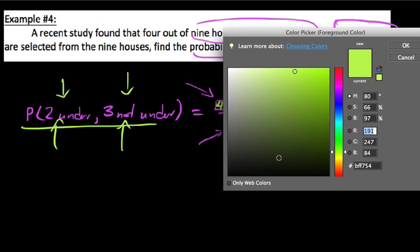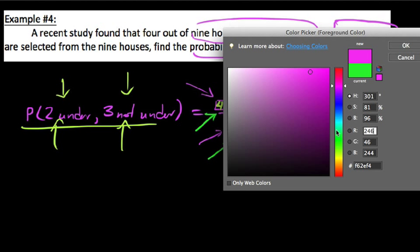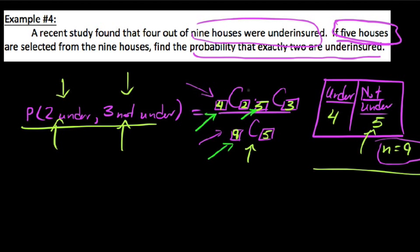One thing I do want to point out though, and so perhaps I'll change the colors over to like a green here. We're almost done with this problem anyways, but, you know, this four here and this five here, they should sum up to the nine that we had total down here. And also, you know, you'll notice that this two here and this three here, if you selected two underinsured and three not underinsured, those are the five total we grabbed here.